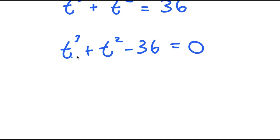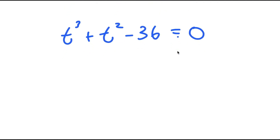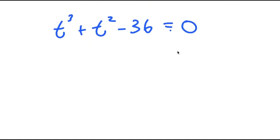So what we have here is an equation that's not quadratic. To actually solve this, what I'm going to do is find one solution of t and then use that solution to find the remaining solutions of t. To find that one solution, we just have to test values of t.